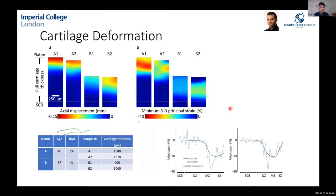Here are results for the four individual samples. The height shown is representative of the actual sample height — donor A has thicker cartilage than donor B. This is of course a small sample size. We found that for most samples, the majority of both displacement and strain occurs closest to the superficial zone — the top zone — of the cartilage. We also carried out ground truth measurements comparing DVC output against manually calculated results and saw a good correlation.